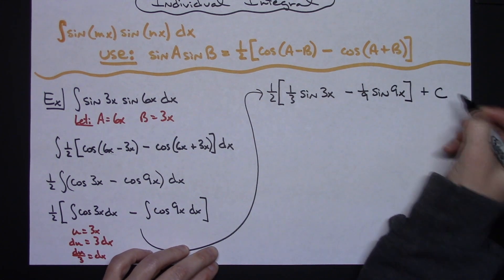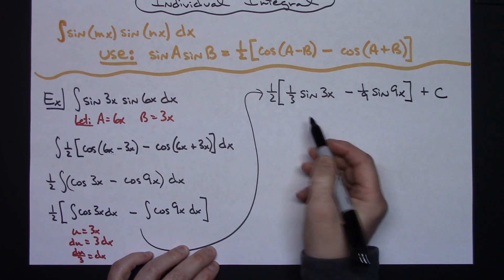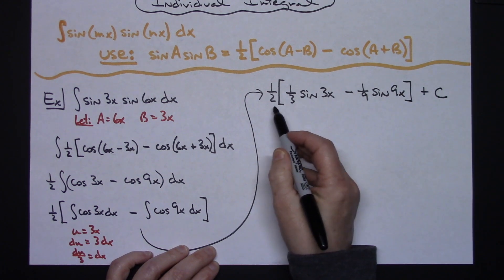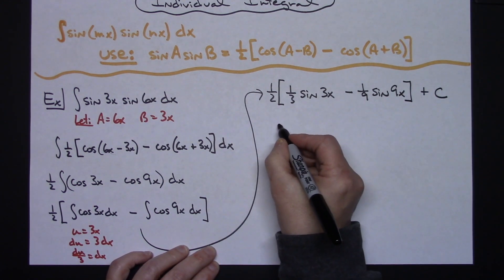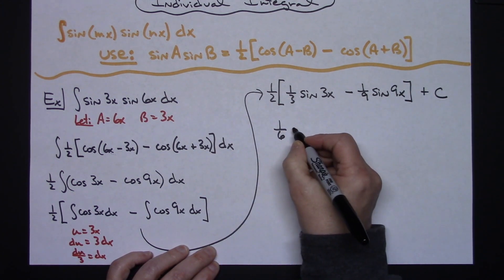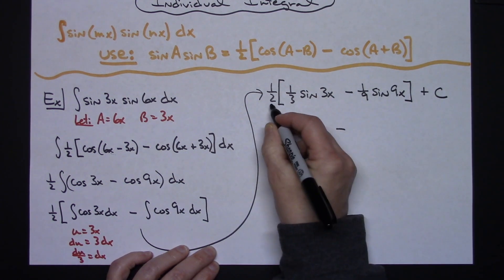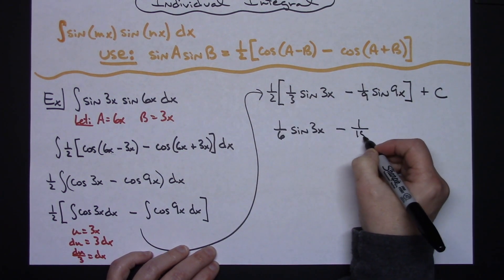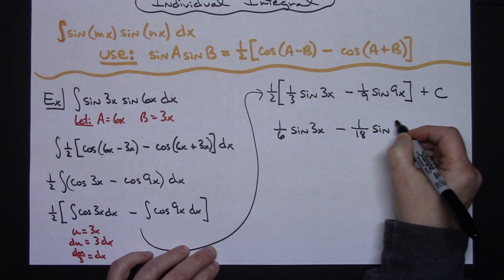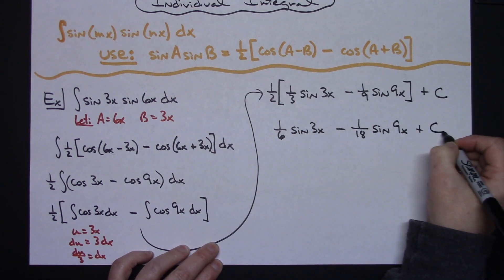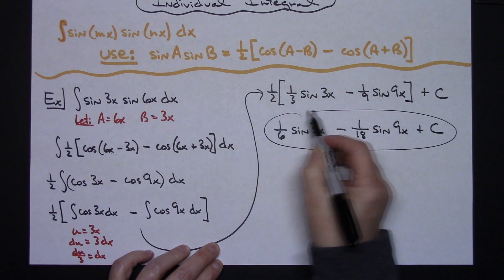And then at this point, I can go ahead and put that c on, because I've actually integrated. Now I'm going to go ahead and distribute the one half, so I'm going to have a one sixth sine 3x, minus a one eighteenth sine 9x, and then plus c.